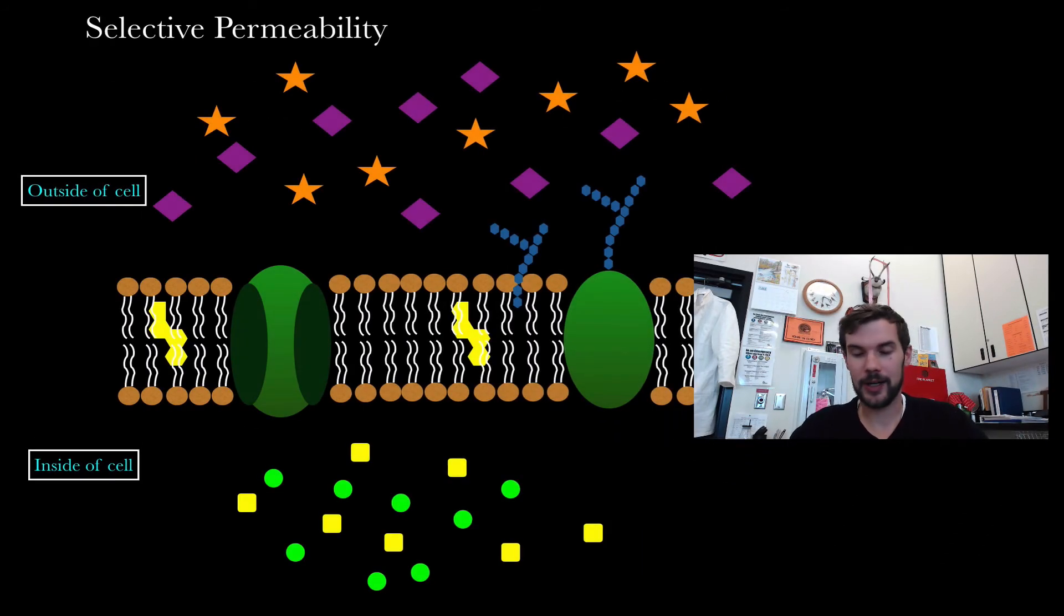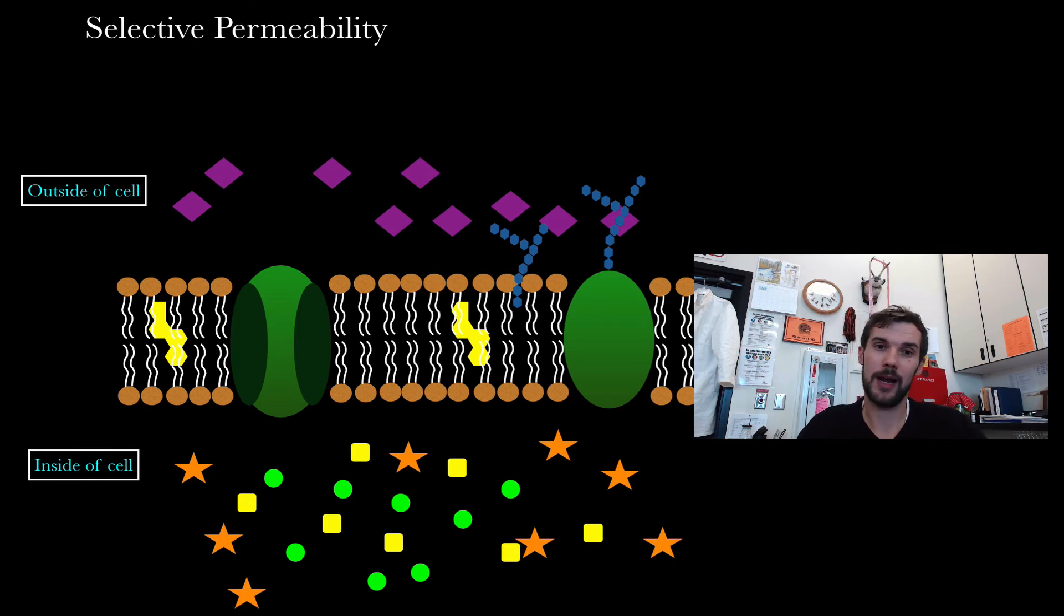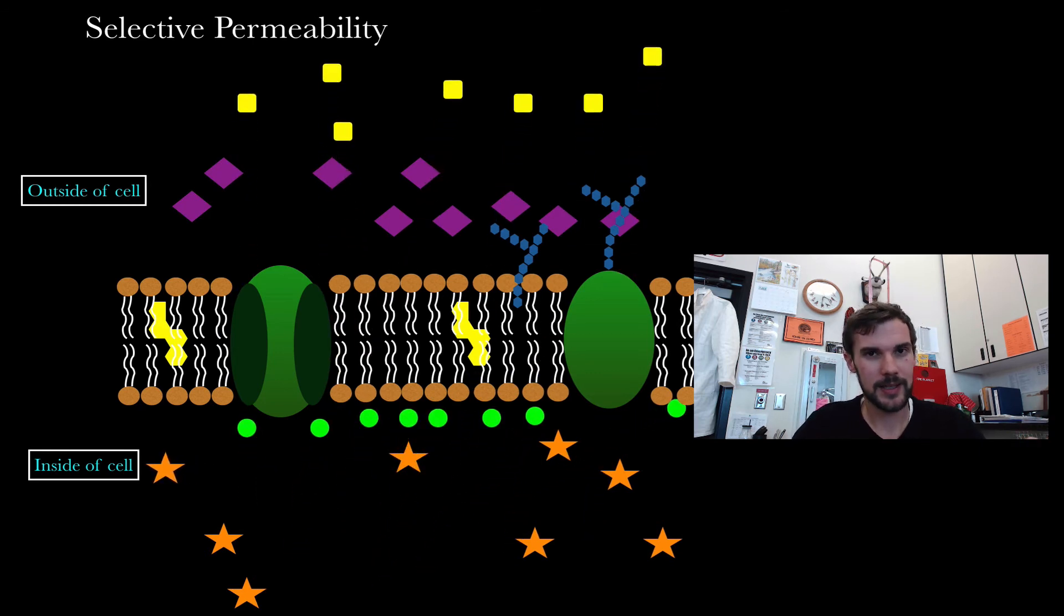All of these things together can prevent or allow molecules access to the cell or out of the cell. Certain molecules will want to go in. These stars, it looks like they were able to go in, probably because they were a small non-charged molecule. But it looks like the pink ones might be too large or they might be charged, and so they can't get past. Or let's say if we want to get rid of some molecules - looks like the yellow ones were able to get through and the green ones were inhibited. In one of the other videos we'll talk about transport and what exactly can get in and out.